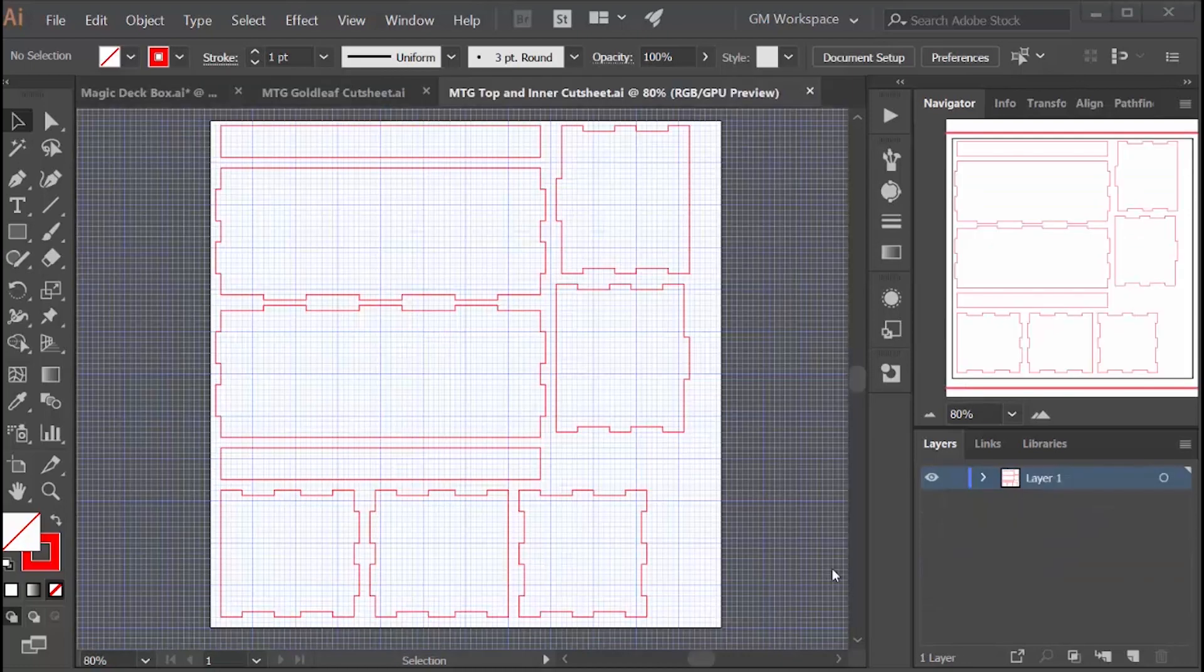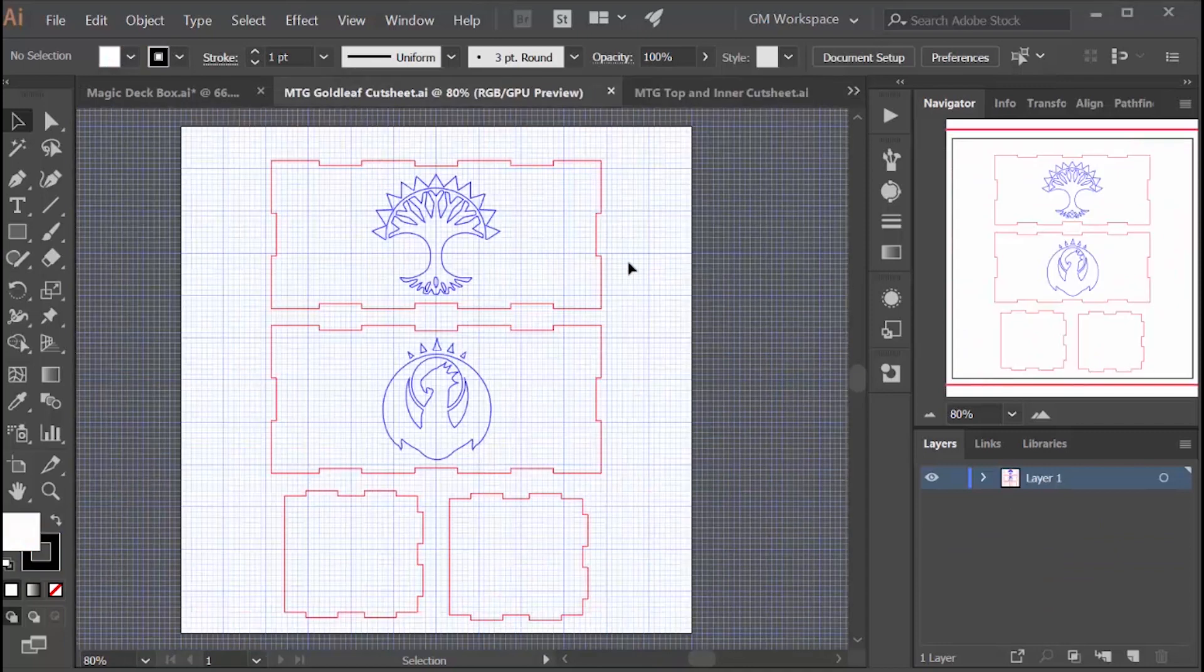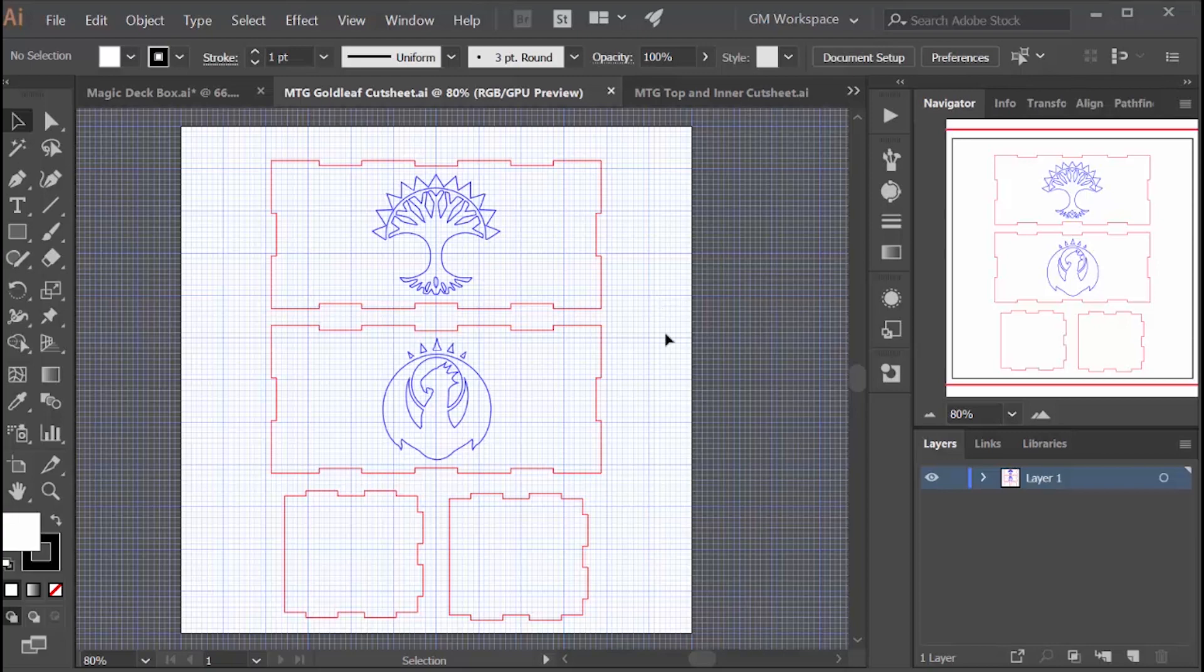The last step is to transfer these to cut sheets for the laser cutter so the wood is 12 inch by 12 inches. I lay it out as efficiently as possible, and then this is the special sheet for the metal leafing.